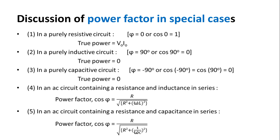Case 4: in an AC circuit containing resistance and inductance in series, the power factor cos φ = R / √(R² + (ωL)²). Case 5: in an AC circuit containing resistance and capacitance in series, the power factor is cos φ = R / √(R² + (1/ωC)²). These are the different cases of power factor.